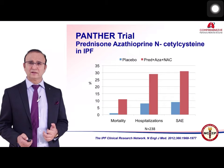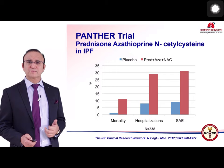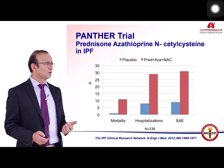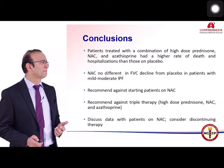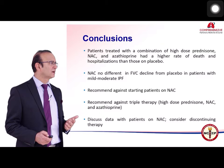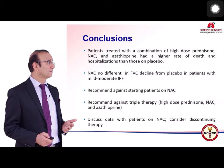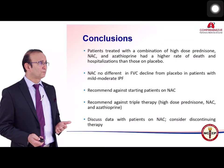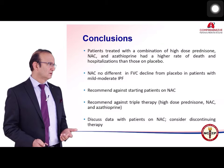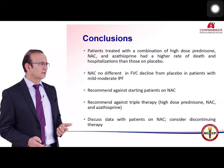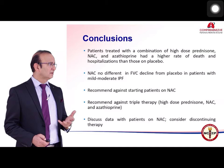Seven of eight deaths in the triple therapy arm were due to respiratory causes, with no difference in FVC, DLCO, or quality of life. This study concluded that the combination of high-dose prednisolone, N-acetylcysteine, and azathioprine had a higher rate of death, hospitalization, and side effects than placebo. It is recommended against starting patients on N-acetylcysteine and against triple therapy, and patients currently on it should discontinue.